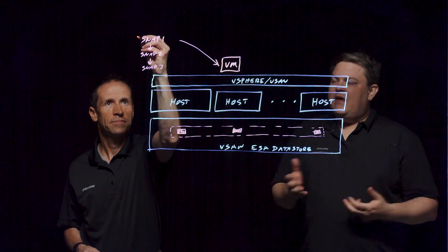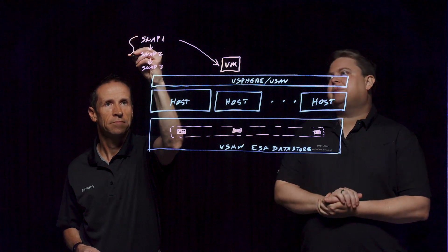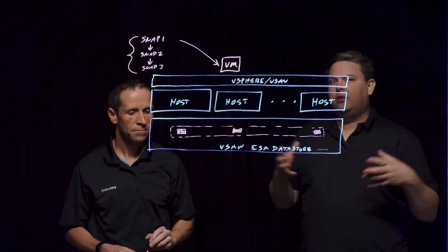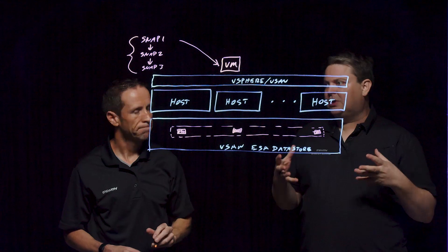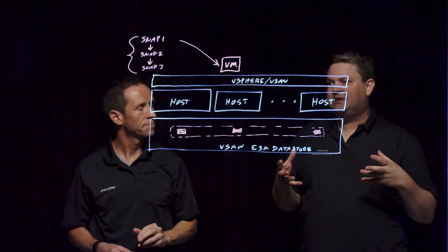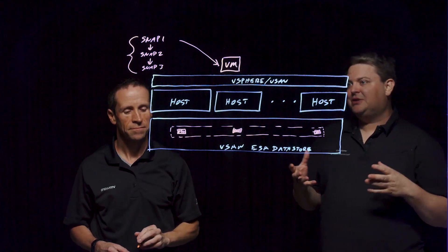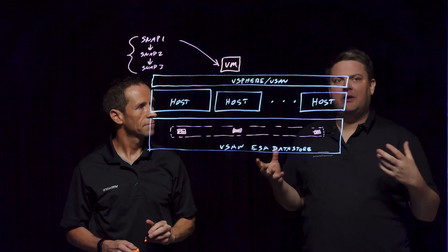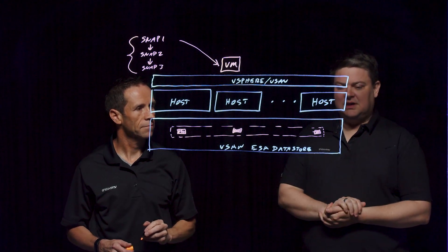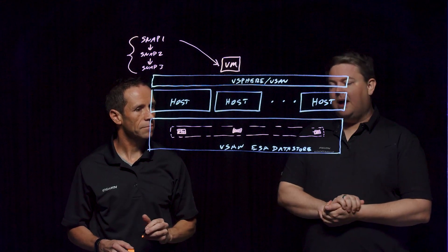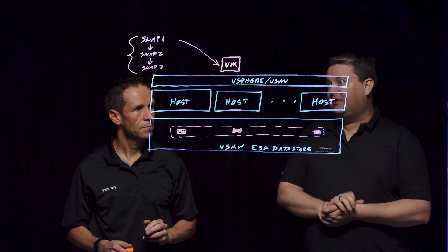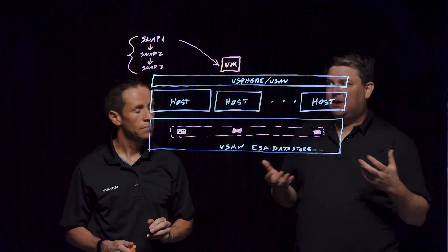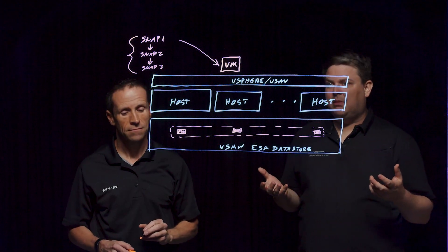For vSAN, there have been improvements made to snapshots in the past, but fundamentally they still use a redo log type structure. This means that whenever you need to delete that snapshot, there was data that had to flow around and move, and this could take significant amounts of time — something that for some workloads could just be excessively problematic.